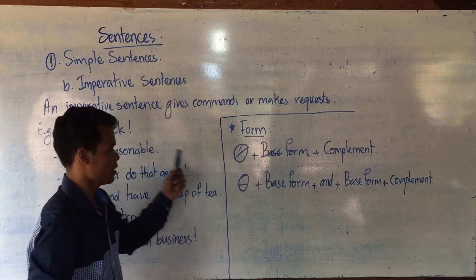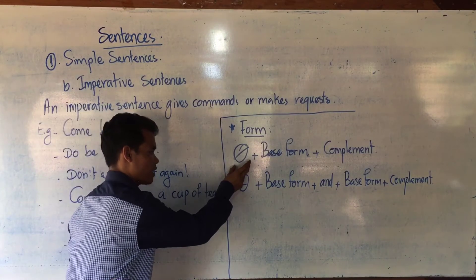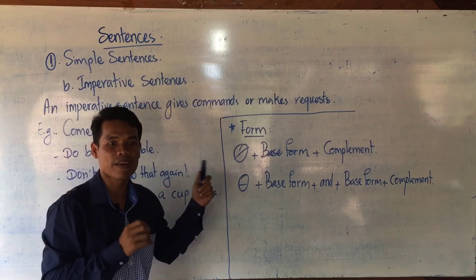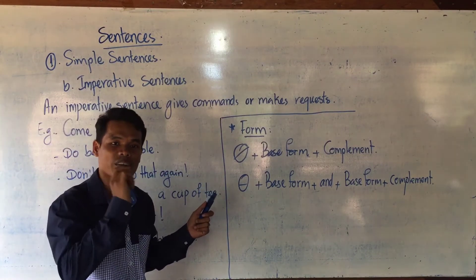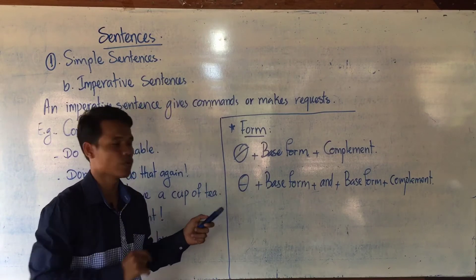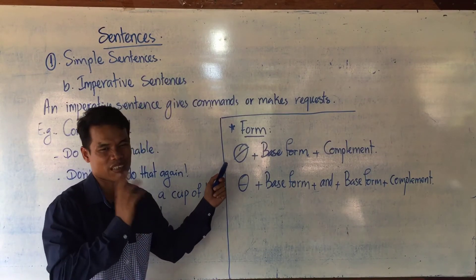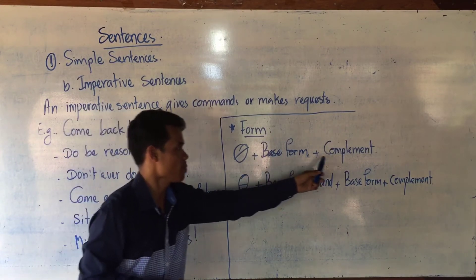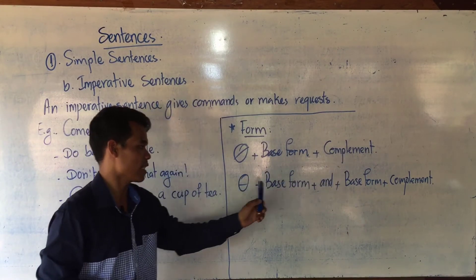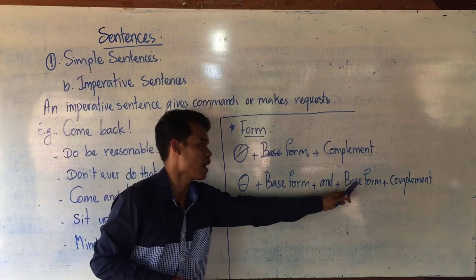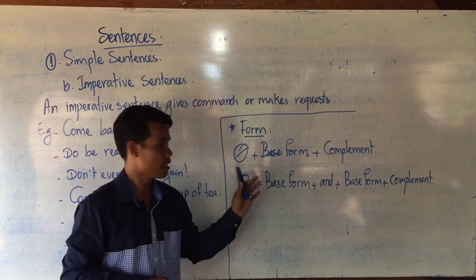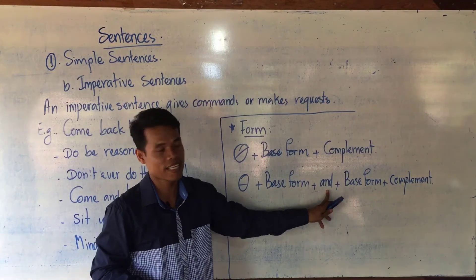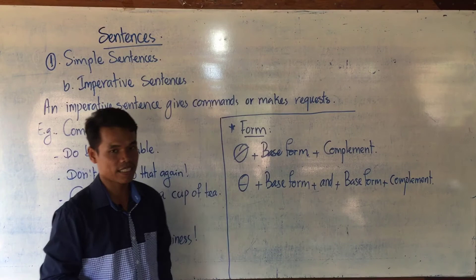But basically imperative sentences end with a full stop only. And this is the form of imperative sentence. This sign refers to hidden subject. Hidden subject in imperative sentence we already know is you, but because it is an imperative sentence that's why you is left out. Base form, complement or object, and we also use the compound verb form without subject. Again, compound you can do or in place of and here, and complement like this.